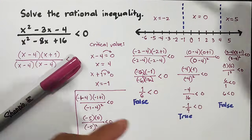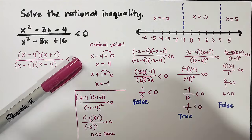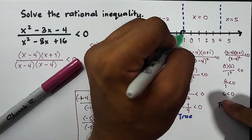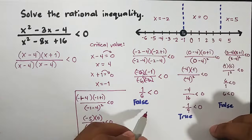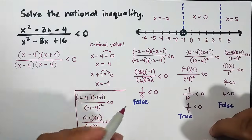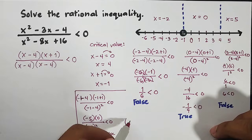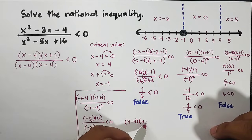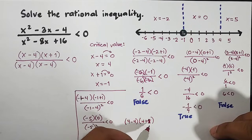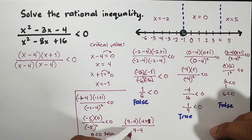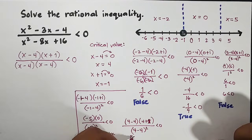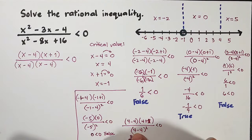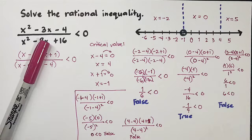Now let's check the critical value x = 4. Using x = 4: (4 - 4)(4 + 1)/(4 - 4)² < 0. If you notice, this is undefined because 4 - 4 = 0, squared is still 0. We cannot have 0 in the denominator, so this is false. This means our critical value is not included.